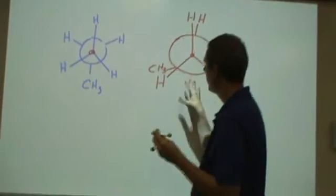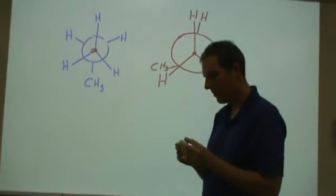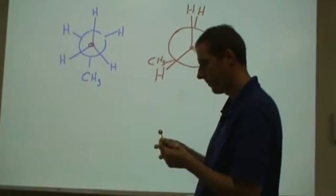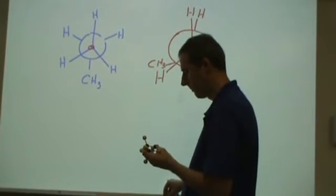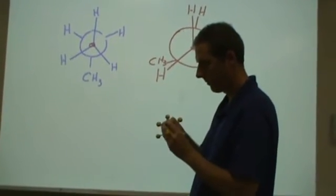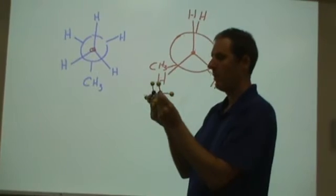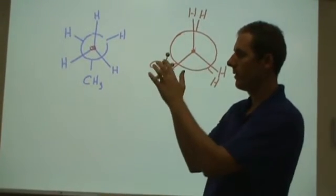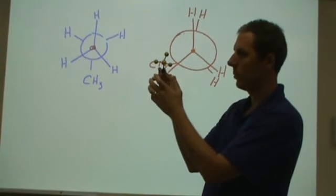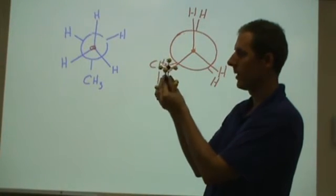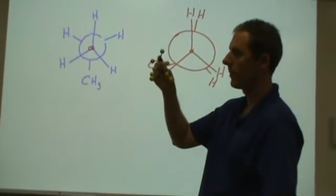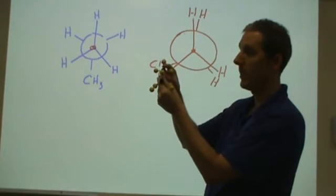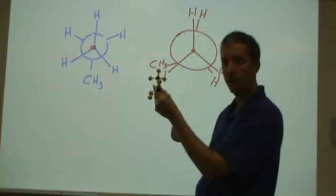I can go ahead and draw what the Newman projection is. We're going to go back to propane for a second. In this, here's what I have: a hydrogen going up, one going to the left, one going to the right. The second carbon also has a hydrogen going to the left, also going to the right, and it has a methyl group going straight up. This is currently in an eclipsed pattern.